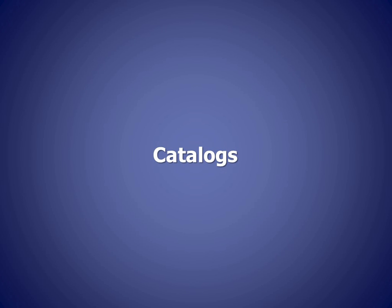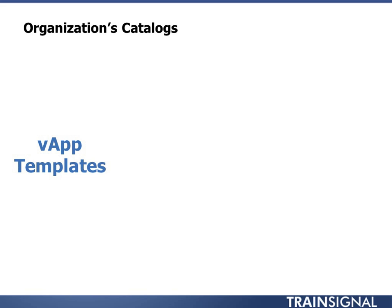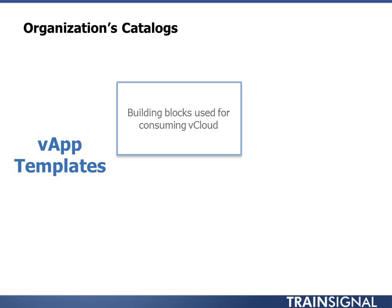Let's go pretty deep into catalogs. A catalog lives within an organization, and the primary object that lives inside of a catalog is a vApp template. You can think of a vApp template as the building blocks used to consume your vCloud. A vApp template could be one virtual machine or many virtual machines, but everything — no matter how many VMs it has — is a vApp.